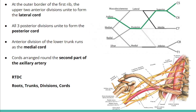At the outer border of the first rib, the upper two anterior divisions unite to form the lateral cord, and all three posterior divisions unite to form the posterior cord. The anterior division of the lower trunk runs as the medial cord. Therefore, the cords are arranged around the second part of the axillary artery.